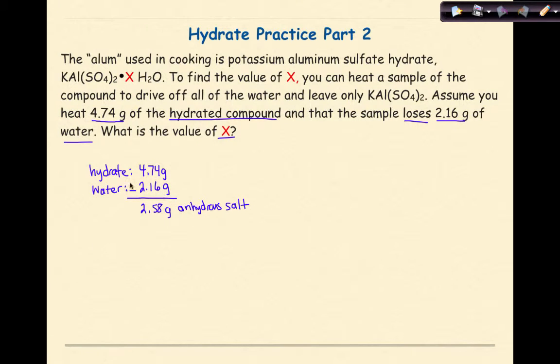Next, I'll convert the mass of water to moles. 2.16 grams H2O times 1 mole H2O over 18 grams H2O. Checking that units cancel: 2.16 times 1 divided by 18 gives 0.12 moles of H2O.